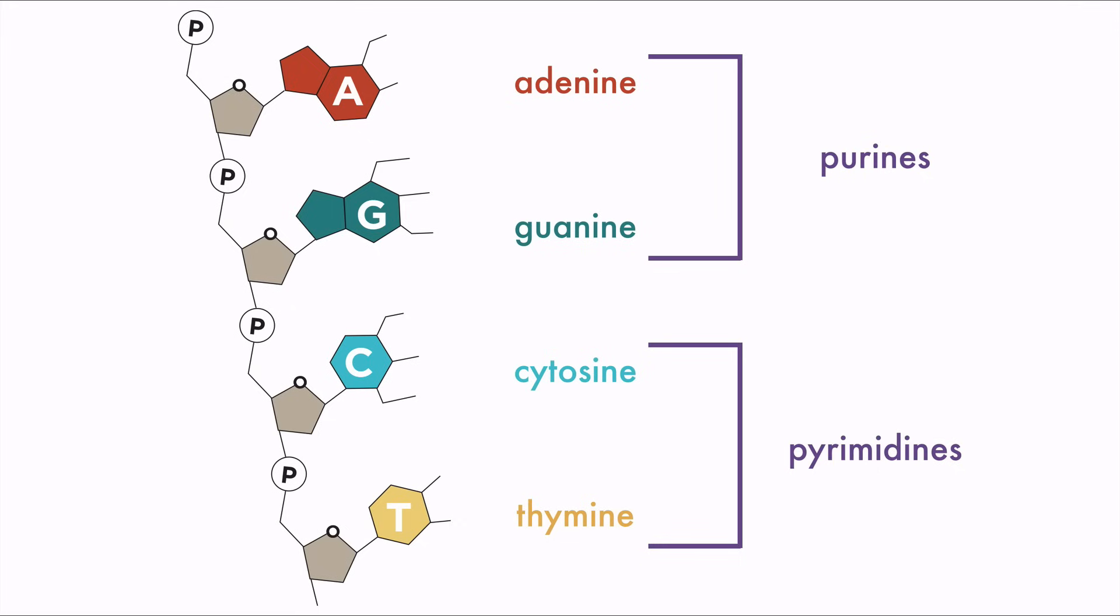Adenine and guanine are purines. Cytosine and thymine are pyrimidines. I remember the pyrimidines are the bases with a Y in their name, just like pyrimidine has a Y in its name.